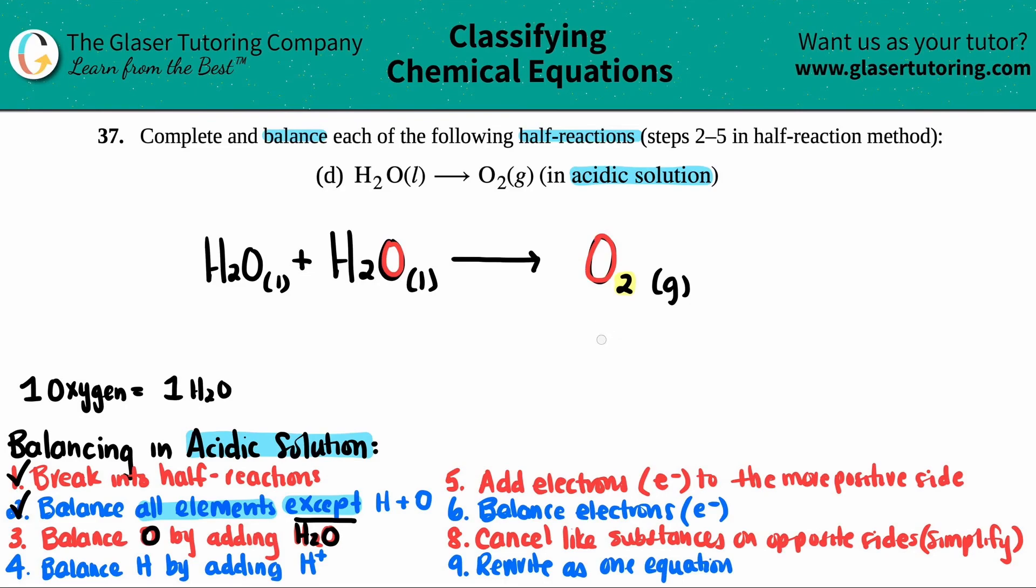But now look at this. This is pretty interesting. I have water plus water. So how many waters do I have? You see how this is literally the same compound. So I can just sum this up by saying, instead of H2O liquid plus H2O liquid, I can just say that I have now two H2O liquids. So that was pretty cool.